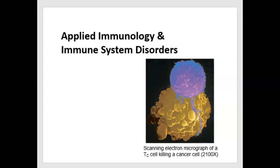Hello, this is Gina Piscitelli with the last lecture on the immune system for students taking Anatomy and Physiology II at Madison College. This picture is a T cell — a cytotoxic T cell killing a cancer cell. The cancer cell is yellow and the cytotoxic T cell is blue or purple. It's magnified 2100 times, so it's pretty small stuff happening in the body.